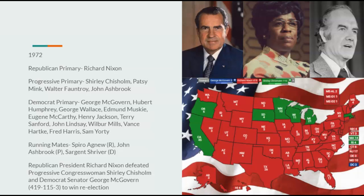Going on to the 1972 election, Nixon wins in a landslide. Shirley Chisholm is the Progressive nominee — she doesn't win any Southern electoral votes but does well in the Northeast, winning Massachusetts and Rhode Island. George McGovern is completely shut out — most Democrat votes go to Shirley Chisholm anyway — and Richard Nixon wins in a landslide.